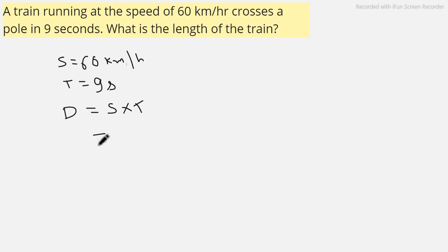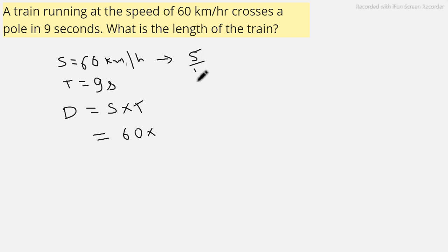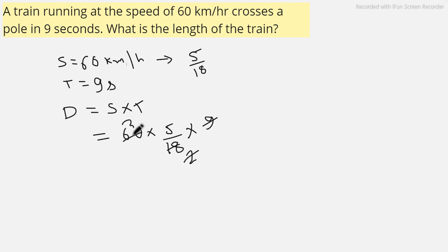The key thing to focus on here is that speed is given in kilometers per hour and time is in seconds, so we have to use a standard form. We convert 60 km/h to meters per second by multiplying by 5/18, then multiply by the time of 9 seconds. This gives 2 × 75 = 150 meters, which is the length of the train.